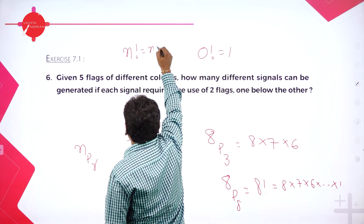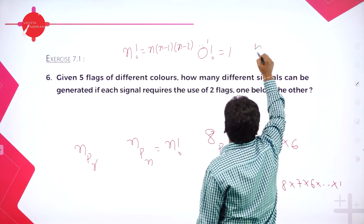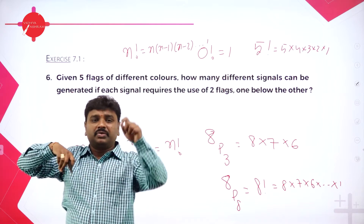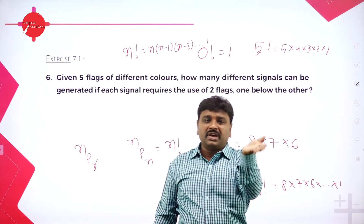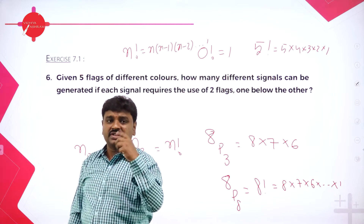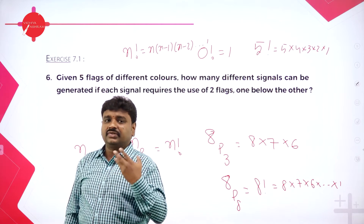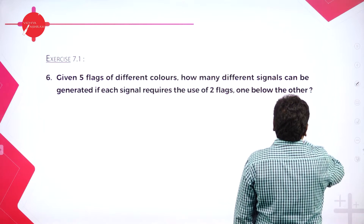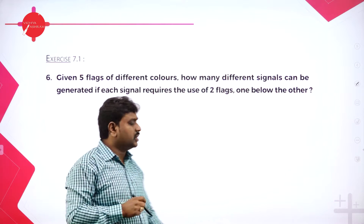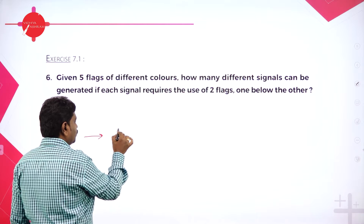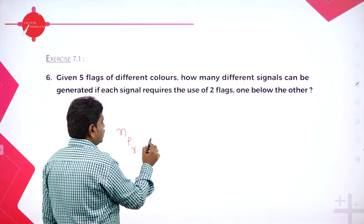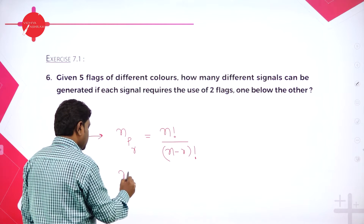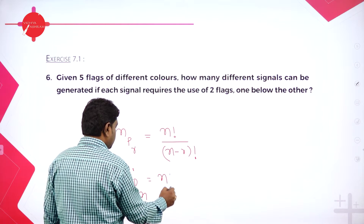Zero factorial equals 1. N factorial means start from N and decrease by 1 each time until you reach 1. For example, 5 factorial is 5 into 4 into 3 into 2 into 1. All six problems of Exercise 7.1 are covered. Special cases: NPR equals N factorial divided by (N minus R) factorial; and when N equals R, NPR equals N factorial.